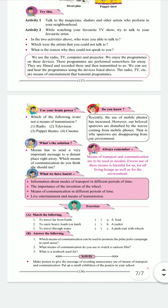Exercises. Match the following: To travel from the earth — a rocket. To carry heavy loads on land — a push cart with wheels. To travel through water — a boat. Which means of communication can be used to promote the pulse polio campaign in rural areas? What means of communication do you use to watch a cartoon film? What is a textbook used for? Activity: Make posters to give messages about avoiding unnecessary use of means of transport and communication. Put up a small exhibition of the posters in your school.